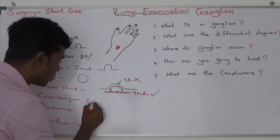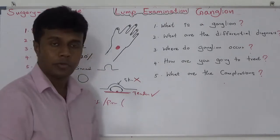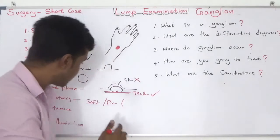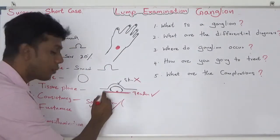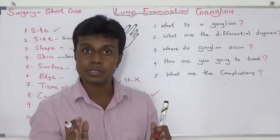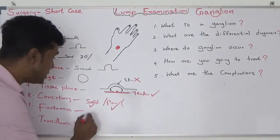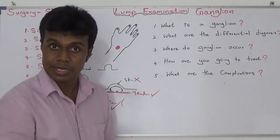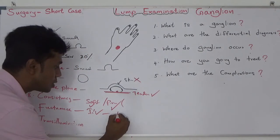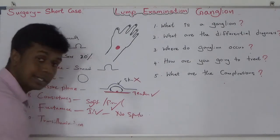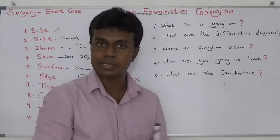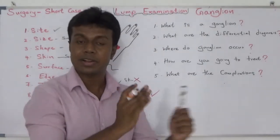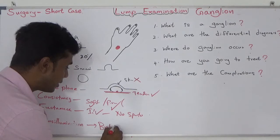Consistency: soft to firm. It contains liquid, but that liquid occupies a very small compartment, causing high pressure — so you may feel it is firm. Consistency can be soft, firm, or fluctuant. It is fluctuant, but unfortunately it is very small, so there is usually no space to properly assess fluctuation. Transillumination: it is one of the brilliantly transilluminating lumps.